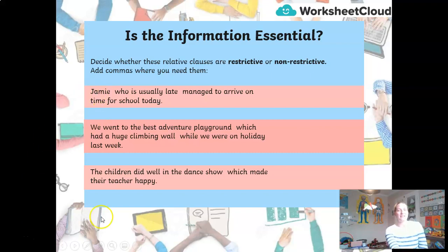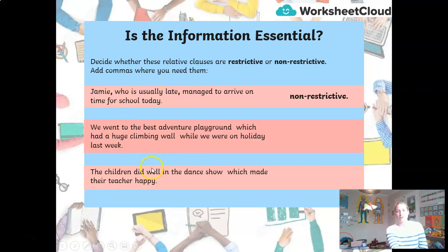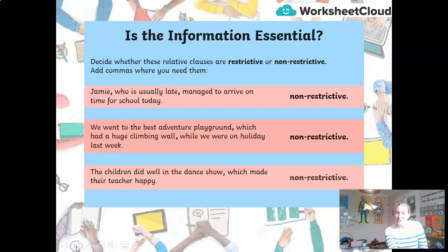Let's do the first one together. 'Who' is the relative pronoun, so 'who is usually late' is the relative clause. It is a non-restrictive relative clause, so I'm going to put a comma on each side. The next one starts with 'which' — 'which had a huge climbing wall' — that's non-restrictive too, so we put commas around it. 'The children did well in the dance show, which made their teacher happy' — another example of non-restrictive, so I put a comma there.